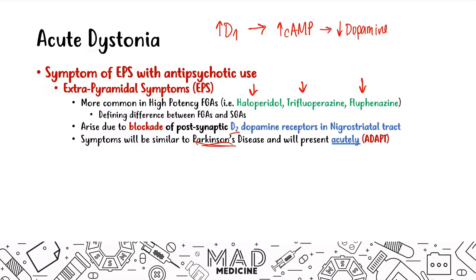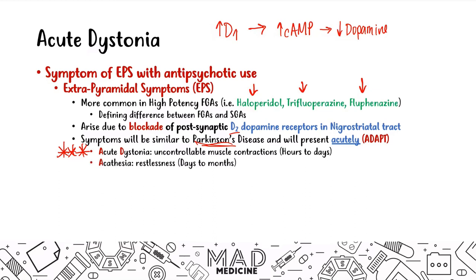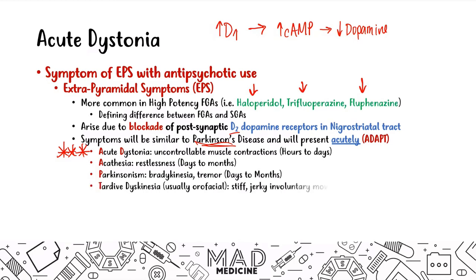In terms of the EPS symptoms, you're going to have acute dystonia, which occurs really quickly — these are uncontrollable muscle contractions that occur hours to days from use. This is our main psychiatric emergency that must be treated right away. You can also have akathisia, which is restlessness that occurs days to months. You'll have drug-induced Parkinsonism, like bradykinesia and tremors. And finally, you'll also have tardive dyskinesia — usually orofacial, stiff, jerky, involuntary movements. Tardive dyskinesia occurs with months to years of chronic use.